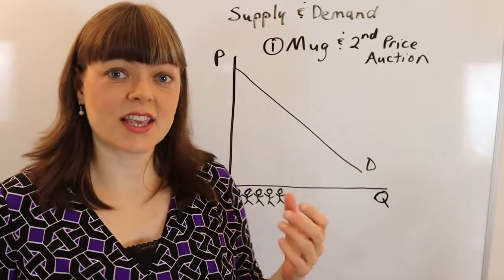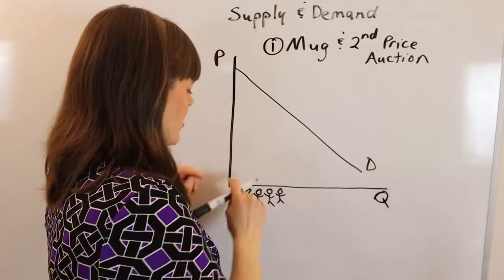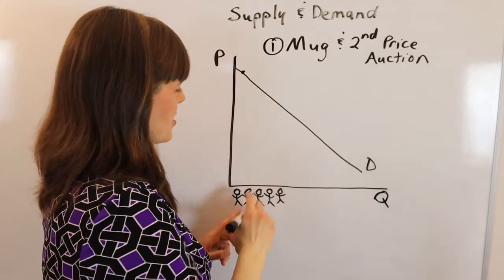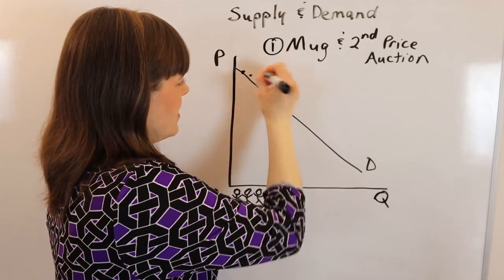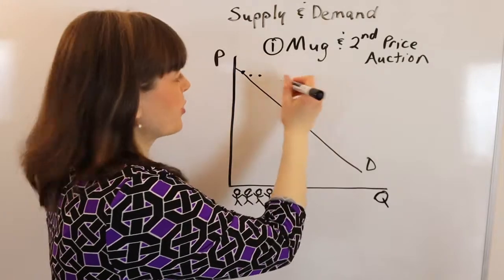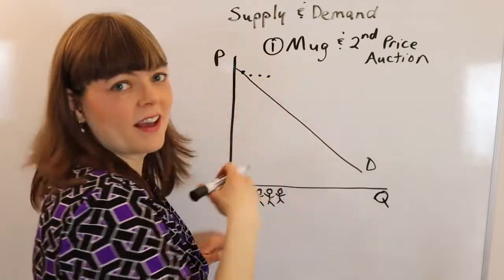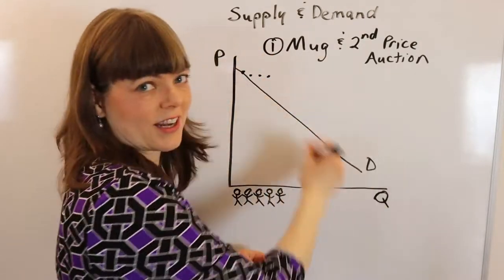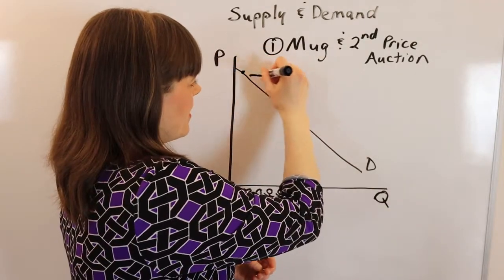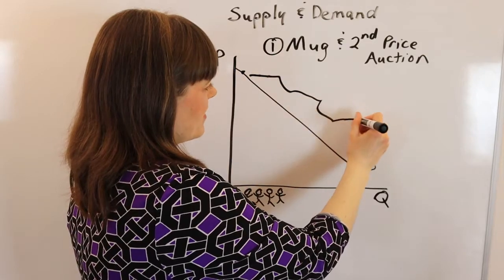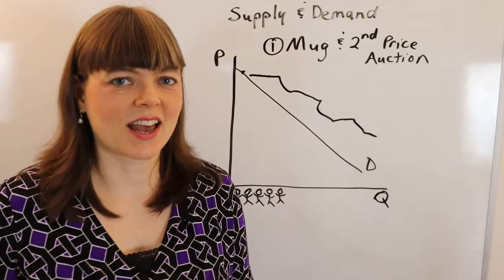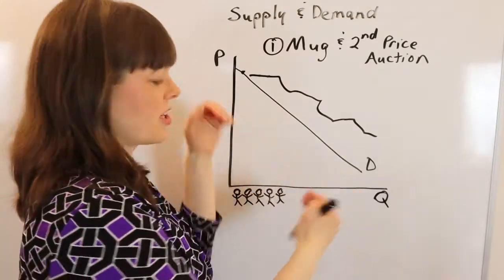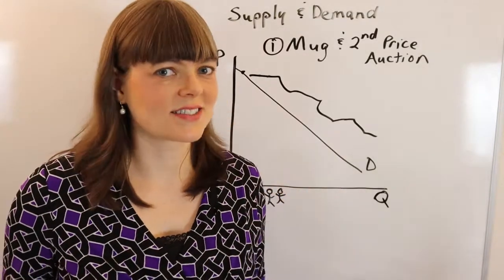You can actually graph their numbers — for example, this person values the mug at $8, this person at $7.50, and actually three people value it at $7.50. Of course, if you use real data from your classroom, it's not going to be a smooth linear demand curve; it's going to look kind of messy and weird. But it will be a demand curve, and at that point they will have an intuition for how the demand curve is derived.